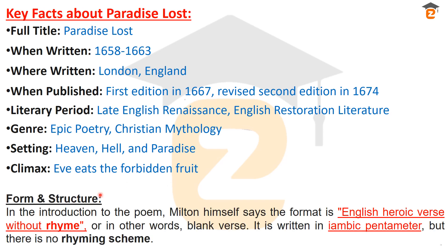Now let's discuss the form and structure of this epic poem, Paradise Lost. In the introduction of the poem, Milton himself says that the format is English heroic verse without rhyme. The heroic verse is used for epic and heroic subjects. In Paradise Lost, Milton has used heroic verse without rhyme — there is no rhyming scheme, no rhyming couplets. In other words, it is blank verse, written in iambic pentameter but with no rhyming scheme.